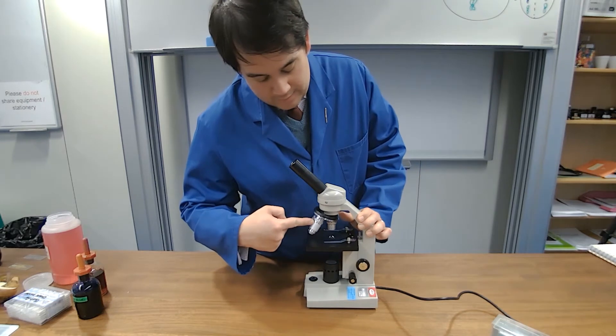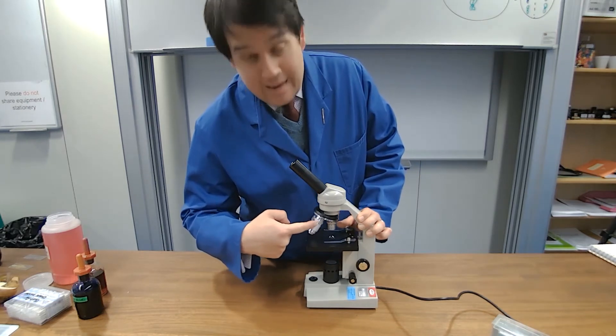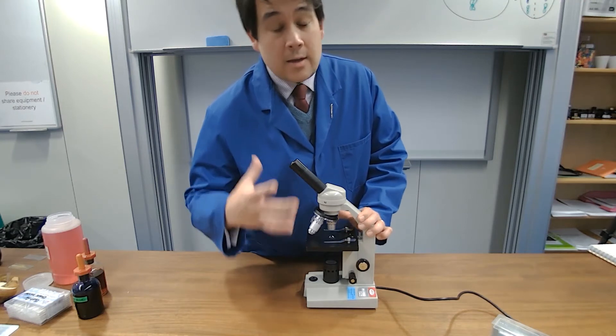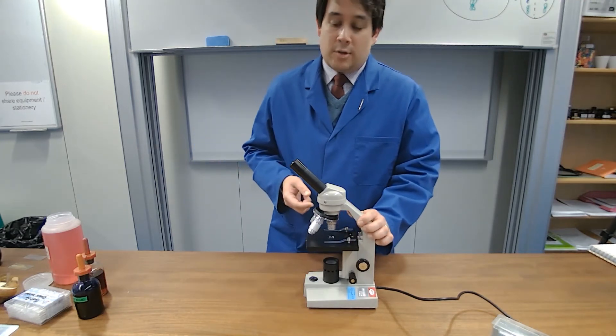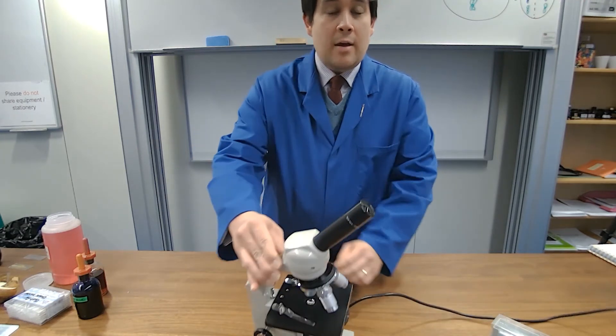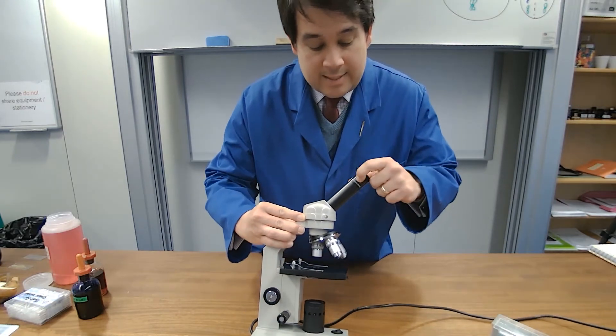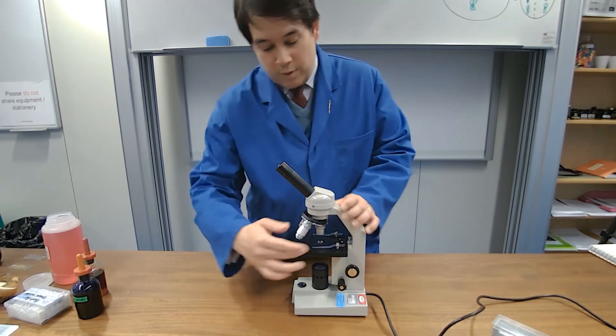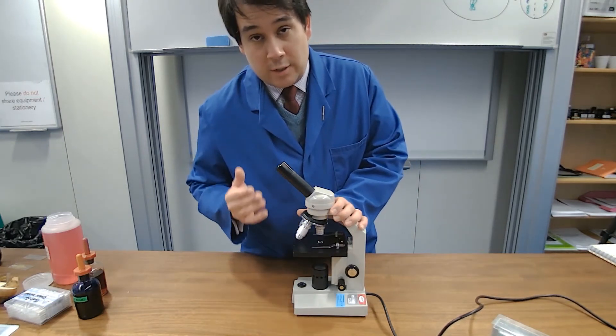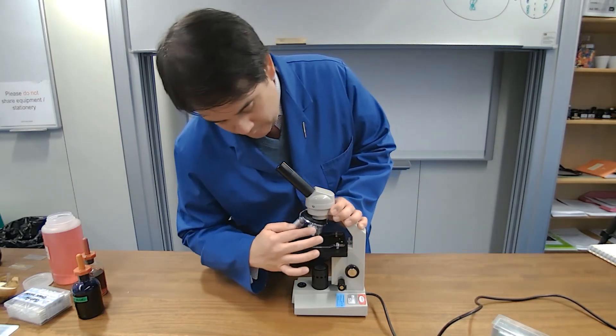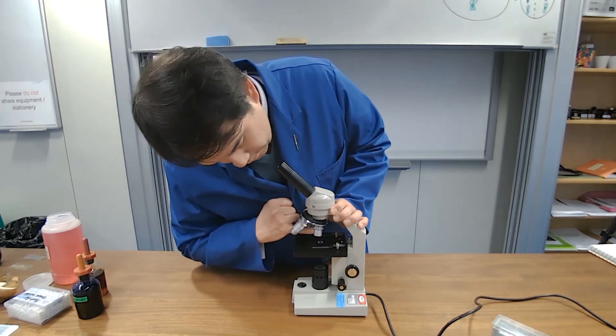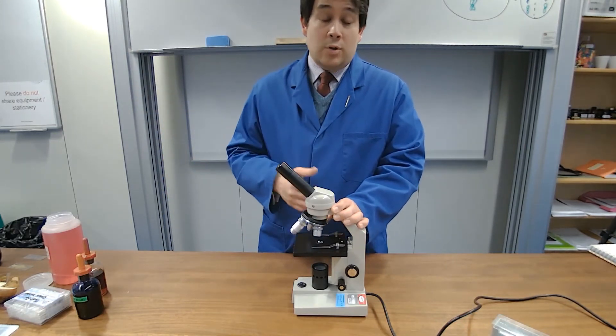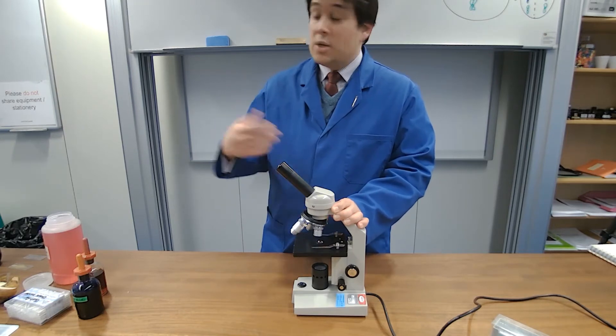We then have the objective lenses and using the magnification written on there and there together we can calculate certain magnifications that we might be using. So if you look closely there you will see that it says that it has 10x magnification. We then multiply that with whatever the objective lens is we're using to look at the specimen. So for example this has the number 4 written there so 4 times 10, 40 which means that you're using a 40 times magnification to look at the specimen.